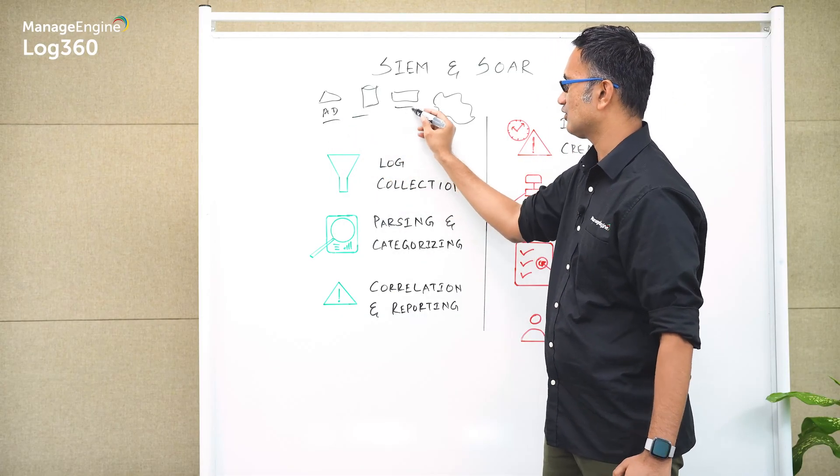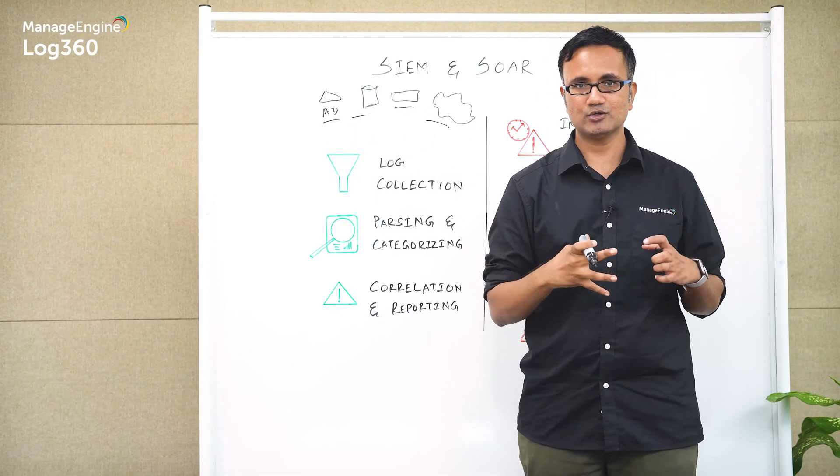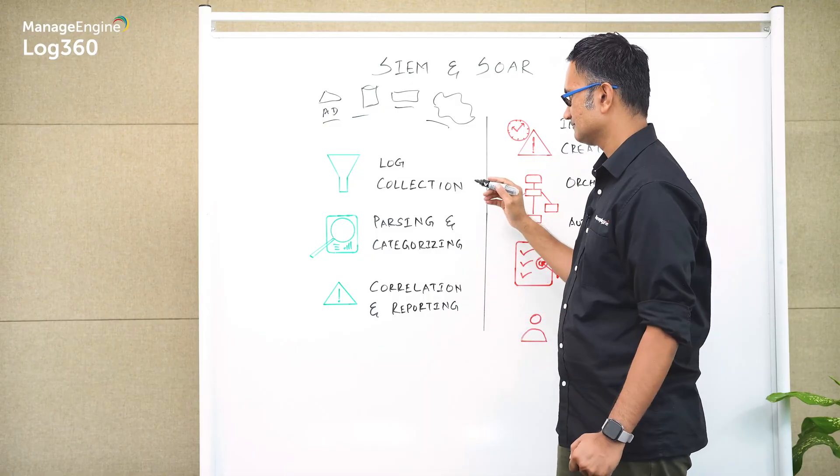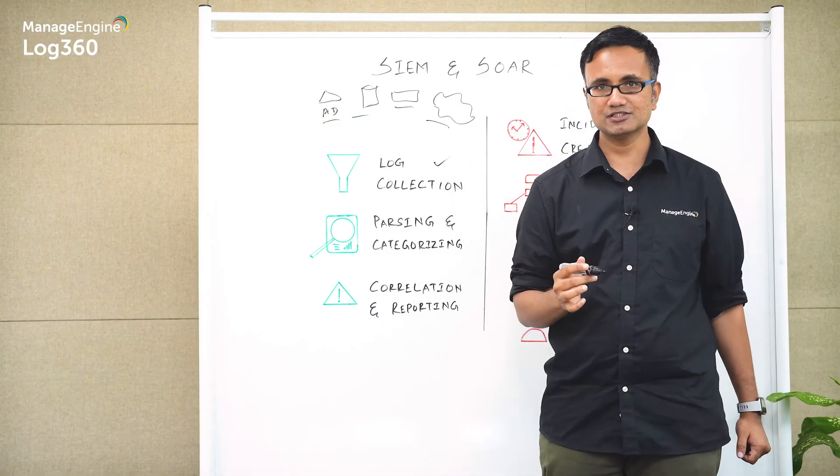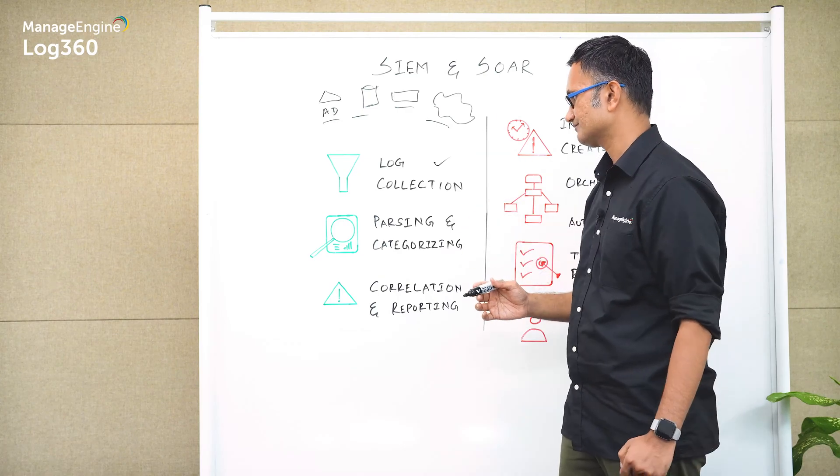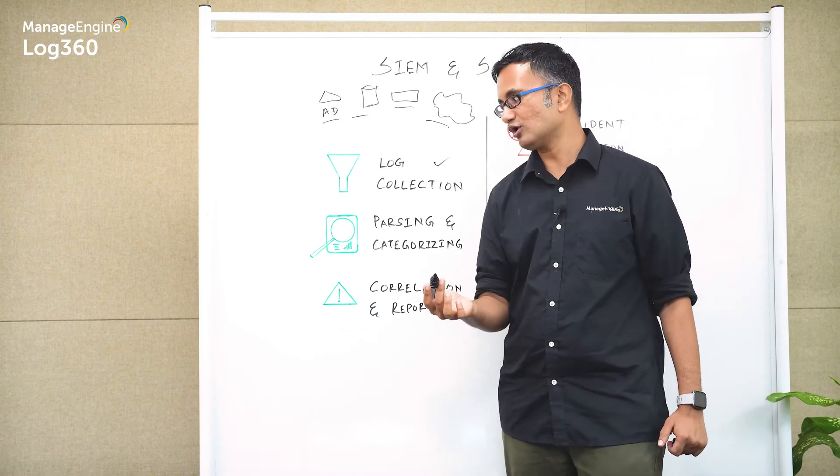So that is the overall objective of a SIEM solution—it's got to be able to collect logs from multiple different log sources, bring it to a central location, and analyze these logs. So log collection is the first capability that's important for a SIEM solution.